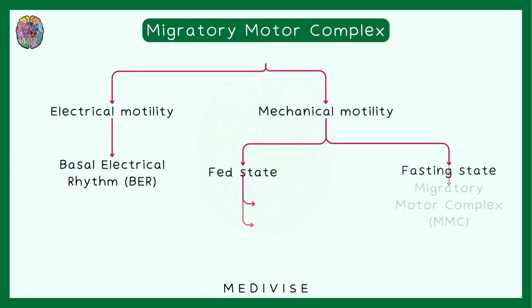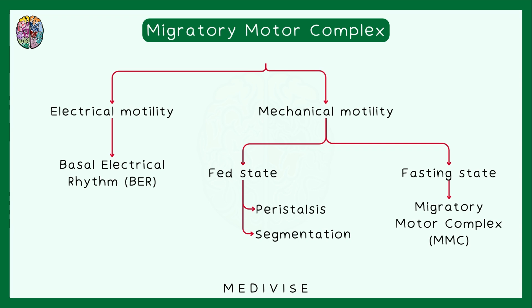Quickly brushing upon what we have learned in the previous videos: we have two types of motilities — electrical motility and mechanical motility. In electrical motility you have the basal electrical rhythm or BERs. In mechanical motility there can be two situations: the fed state and the fasting state. In the fed state you have peristalsis and segmentation, and in the fasting state you have the migratory motor complex. In this video we will study about MMCs.